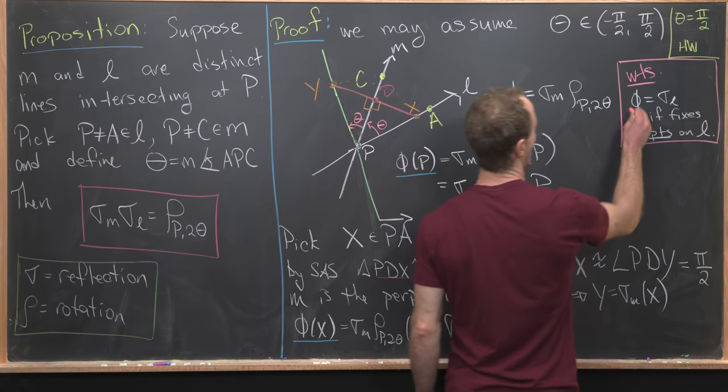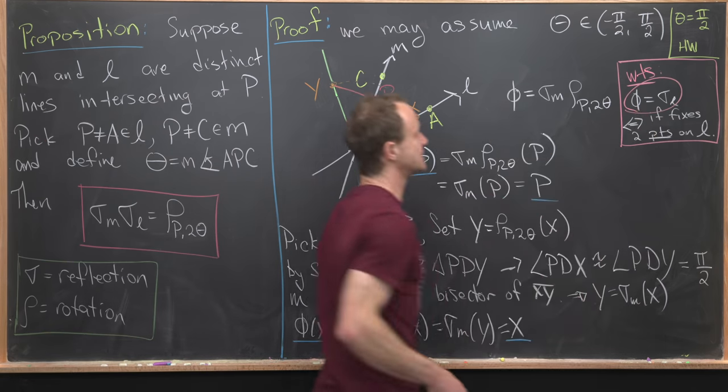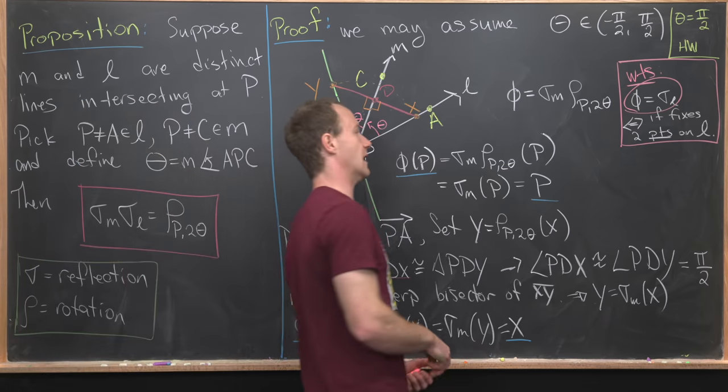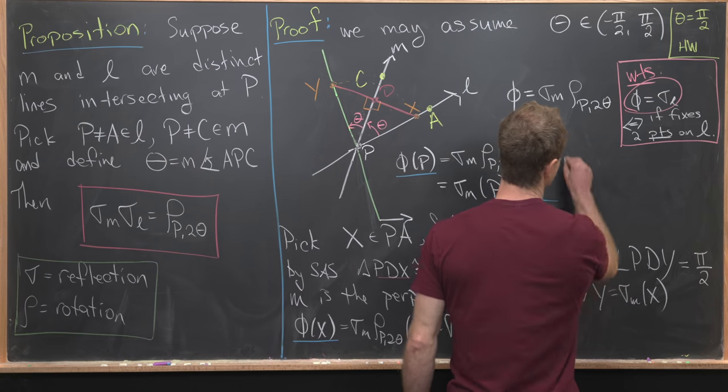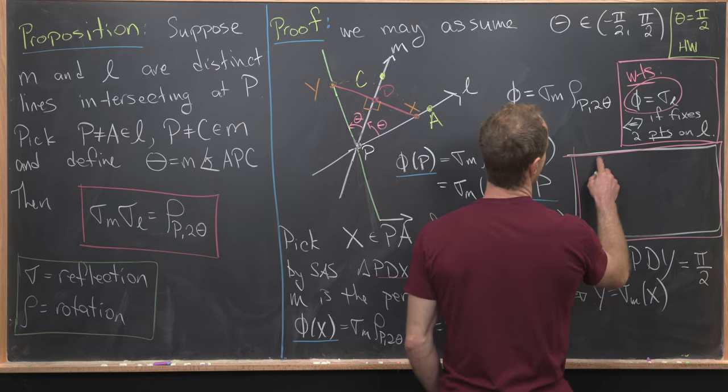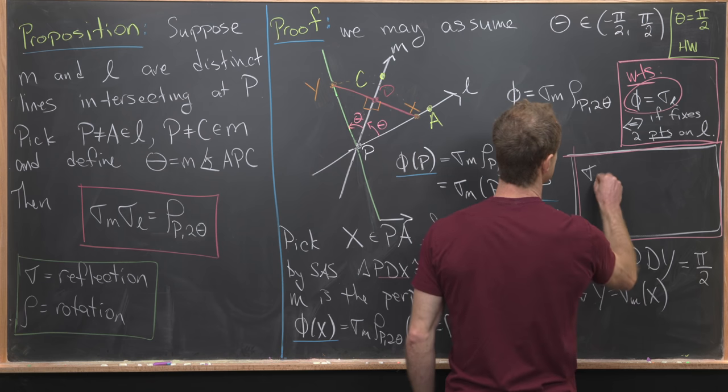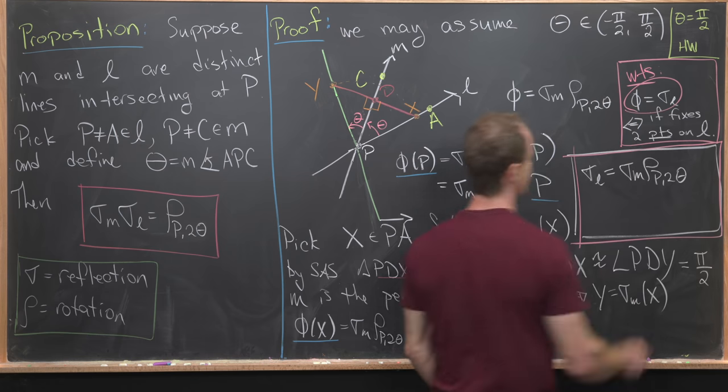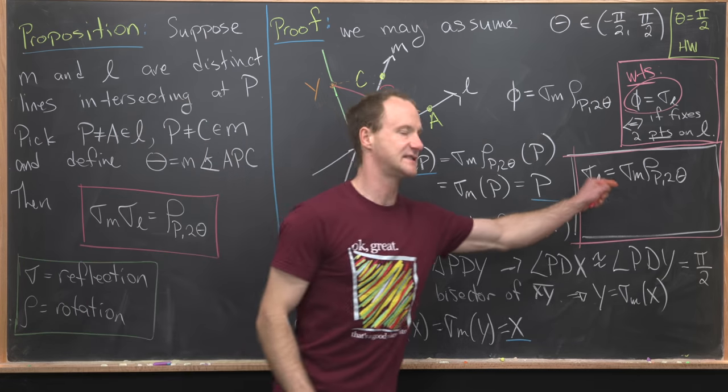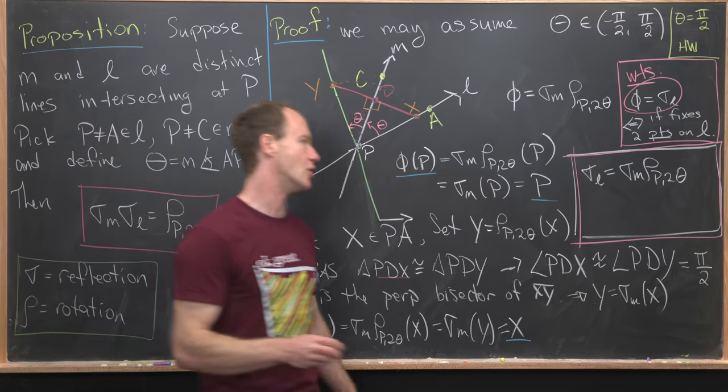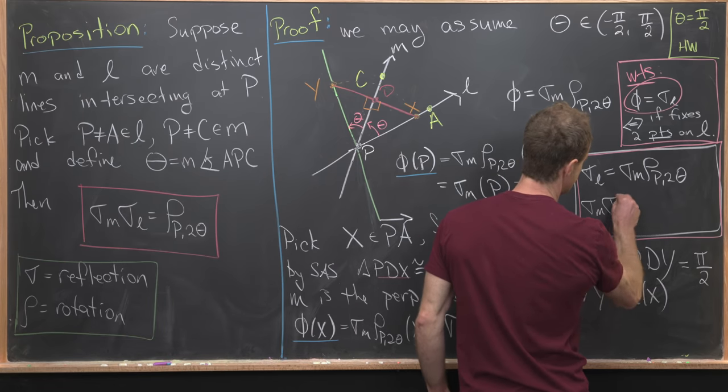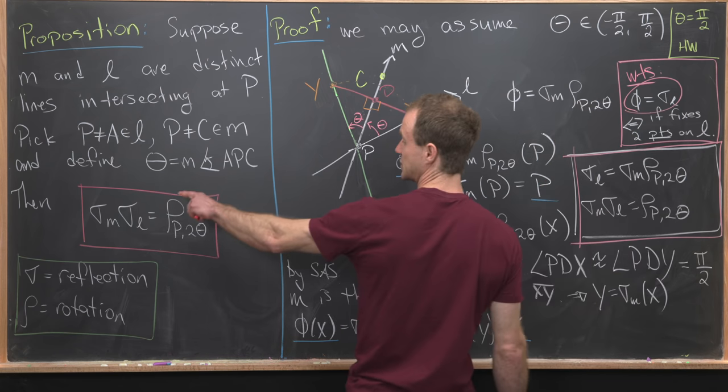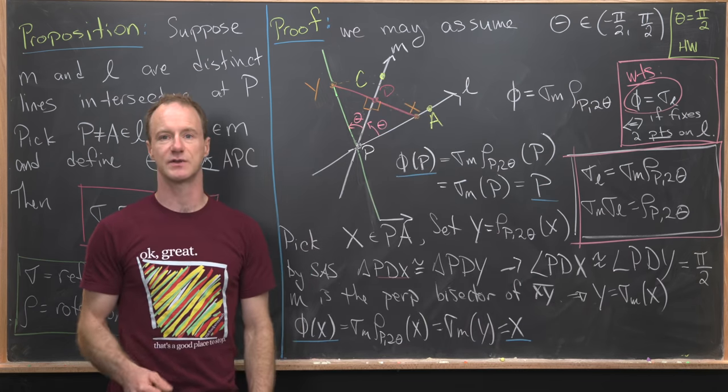But that means that we finished this want to show because phi was equal to sigma L if and only if it fixed two points on L. Just to finish everything off right here, we have phi, which is equal to sigma L is equal to sigma M and then rho P two theta. Now we can left multiply by sigma M. Reflections are their own inverses, giving us sigma M, sigma L equal rho P two theta, which is exactly what we wanted to end at. And that's a good place to stop.